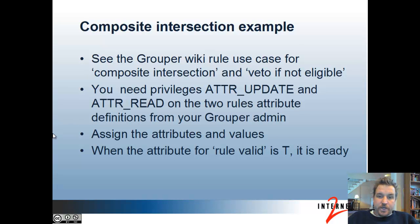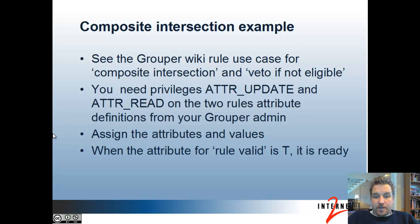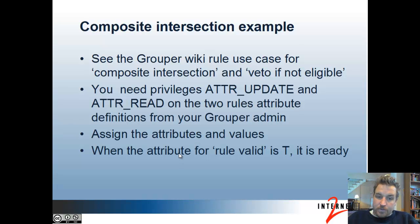See the Grouper wiki use cases for composite intersection and veto-if-not-eligible. To assign rules you need the ATTR attribute privilege and ATR read privilege on the two rules attribute definitions from your Grouper admin. If you have trouble seeing the rules to assign in your UI, make sure you have those two privileges and that you're using Grouper 2.1.4 or later — otherwise the admin needs to do it for you.